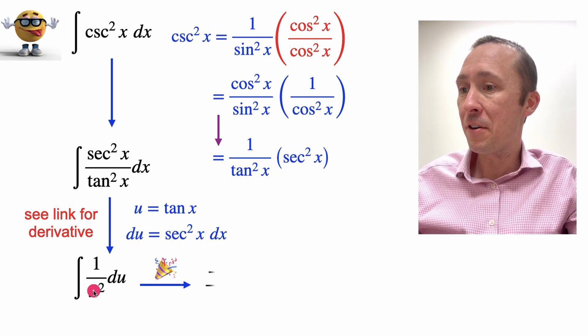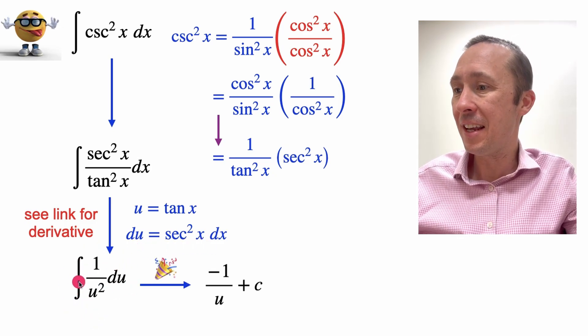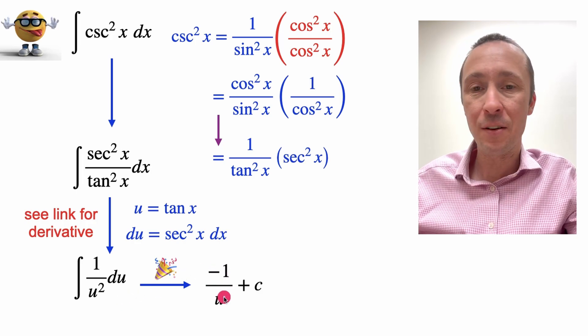So we can reverse power rule this away. The integral of 1 over u squared is negative 1 over u.